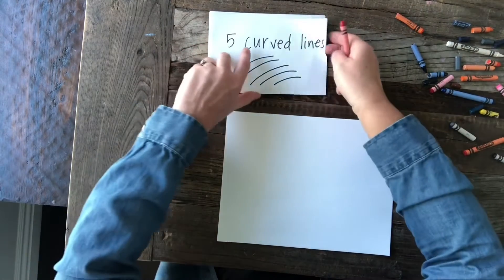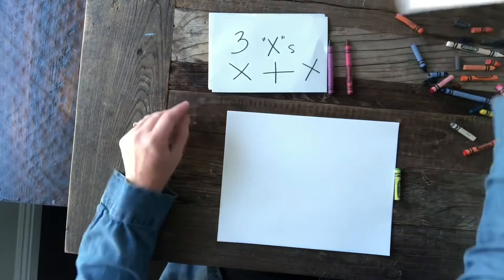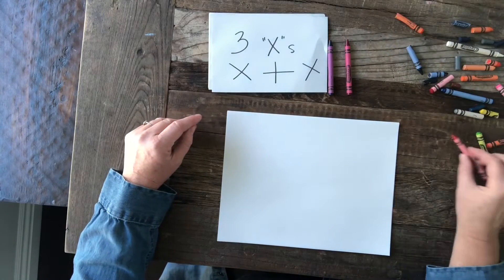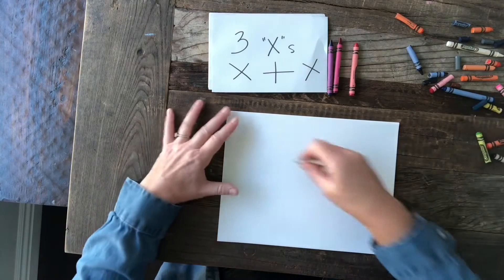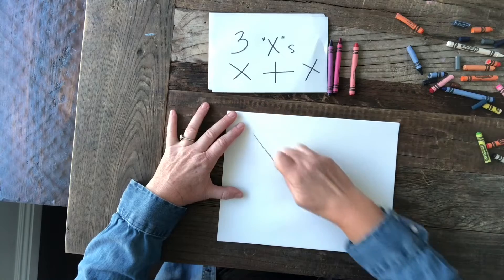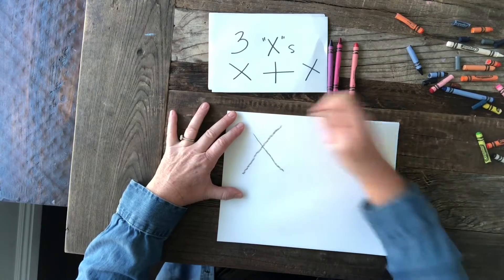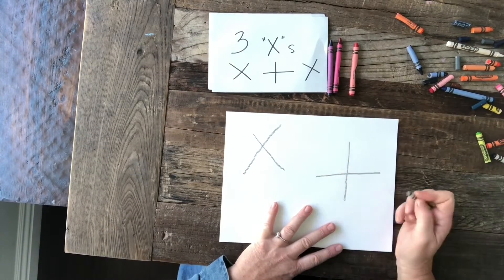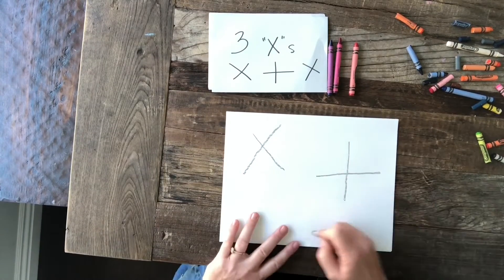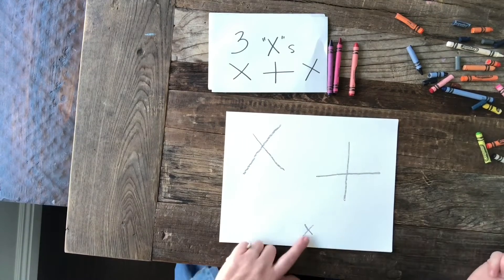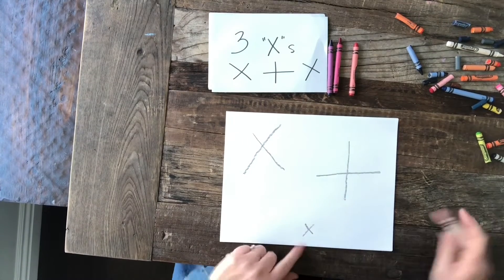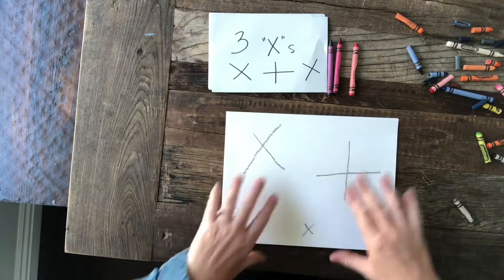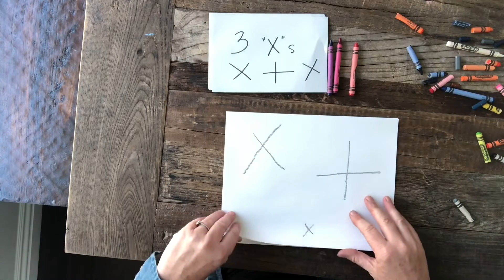Next thing to add is three X's. One, two, three — I'm going to do one tiny one. Again, it's okay if it's overlapping with the other shapes you've already drawn.